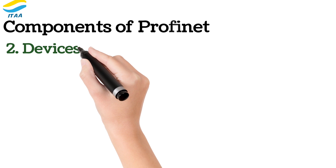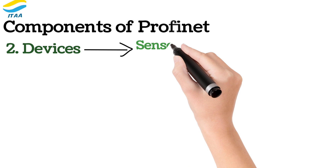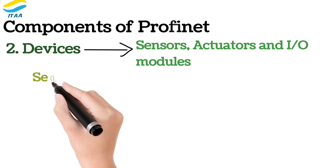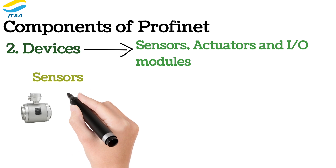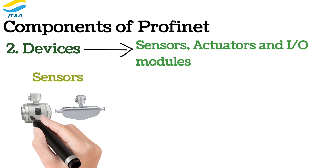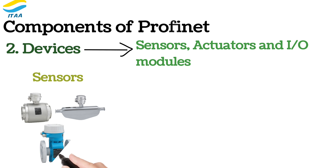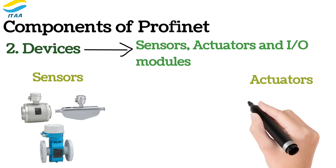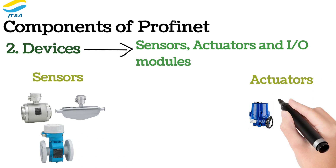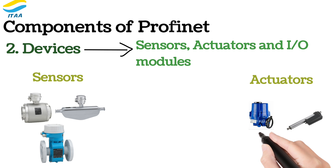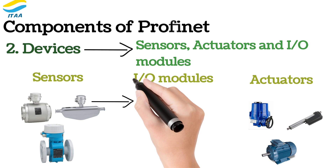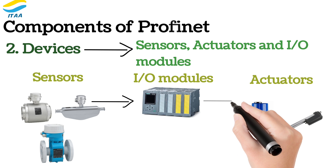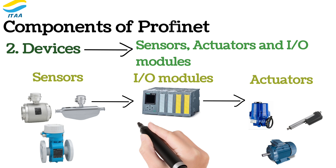Devices in PROFINET are the physical components such as sensors, actuators, and I/O modules. Sensors collect information about the environment — like temperature, pressure, or machine status — and feed this data into the network. Actuators, on the other hand, carry out physical actions like turning valves, moving levers, or activating motors based on commands from the controller. Input/output I/O modules are intermediary devices that connect sensors and actuators to the controllers, converting analog signals to digital ones and vice versa.